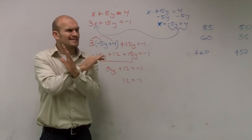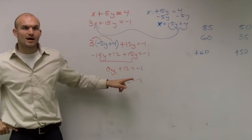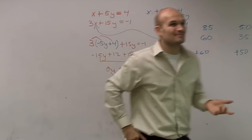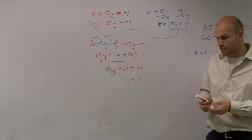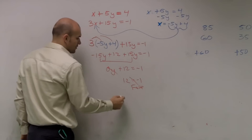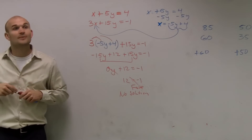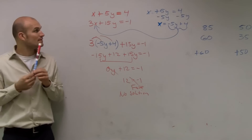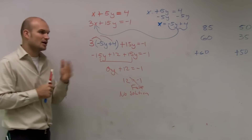I can't find x or y. If we think about this with graphing, the solution is where the two lines intersect — there's an x-coordinate and a y-coordinate. But our y's and x's canceled out, so these two lines don't have an intersection point. This is no solution. And you can tell because 12 does not equal negative 1 — that is false. Lines that don't intersect are parallel lines.